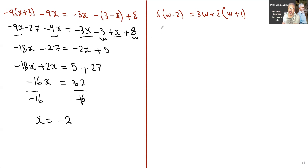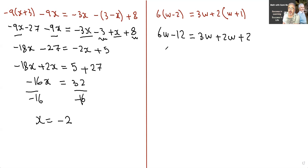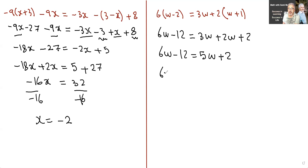Now this one is a bit easier. So 6w minus 12 — distribute the 6 into both the w and minus 2 — equals 3w. Then plus 2 has to be distributed into both: plus 2w plus 2. Collect like terms first: 6w minus 12 equals 3w plus 2w, which is 5w, plus 2. Now bring the w's to the left and numbers to the right: 6w minus 5w, change the sign. Bring the negative 12 to the other side — it becomes plus 12. So w equals 14.